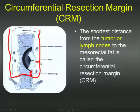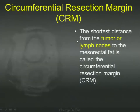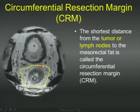To assess the CRM on MR, you measure the shortest distance between the margin of the tumor or a positive lymph node and the mesorectal fascia. It's important to emphasize: it's not only the primary tumor but also positive nodes in close proximity to the mesorectal fascia. Measure the shortest distance and put that in your report.